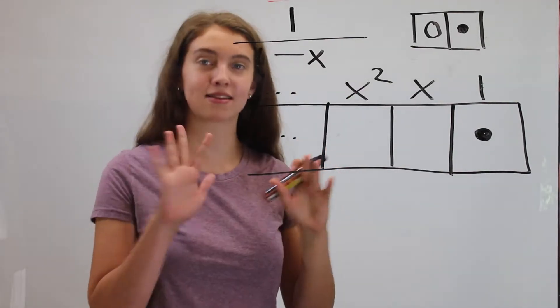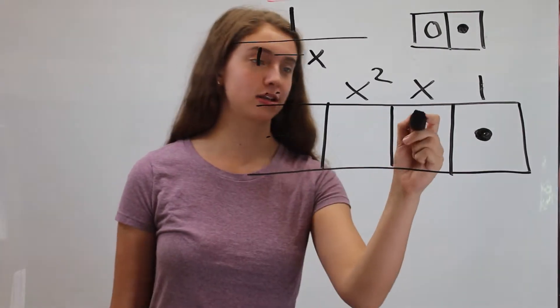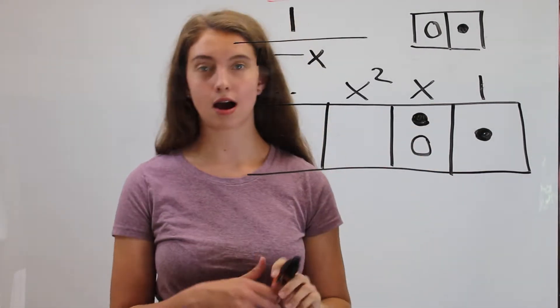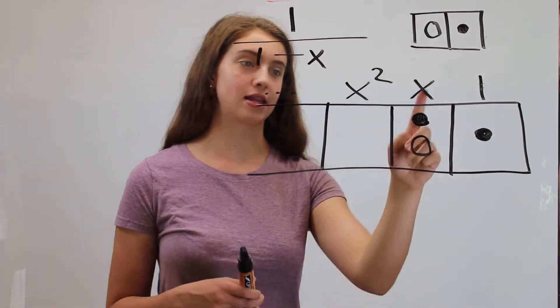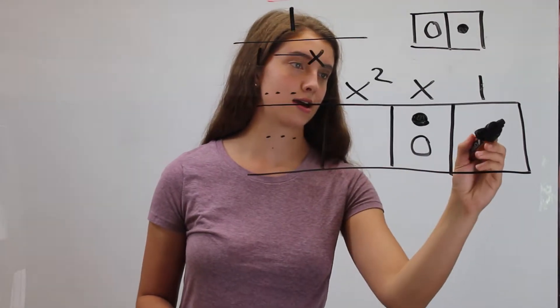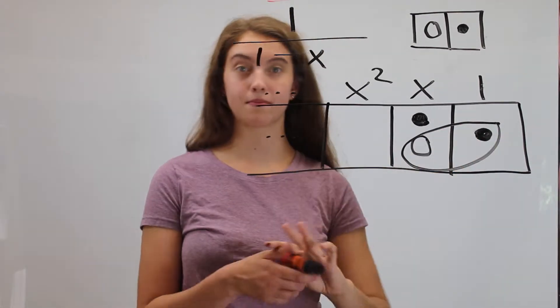But we can use a trick. We can add zero wherever we want, right? So I can write zero, a positive dot, and a negative dot in the x place. And there we can find our pattern.